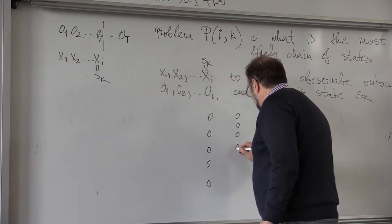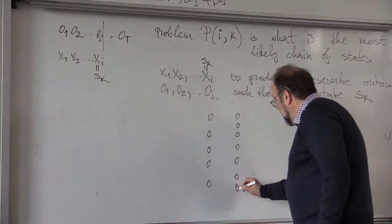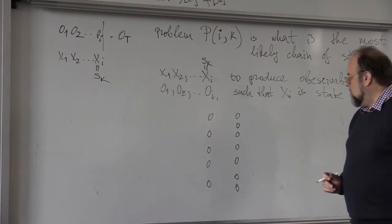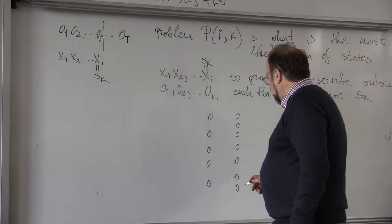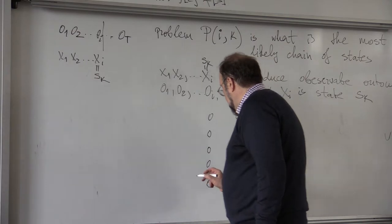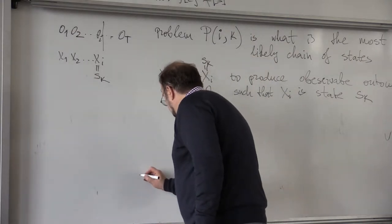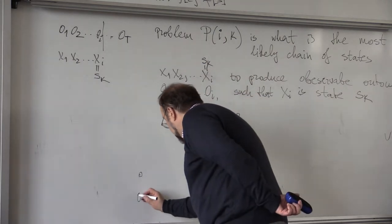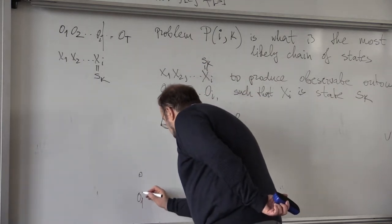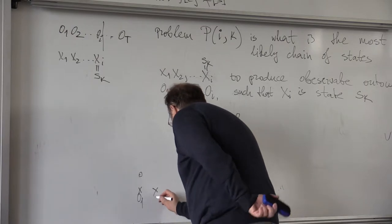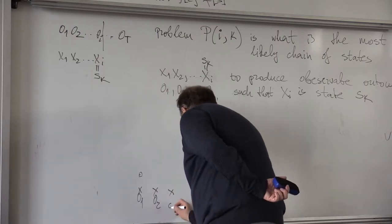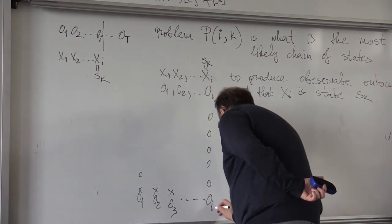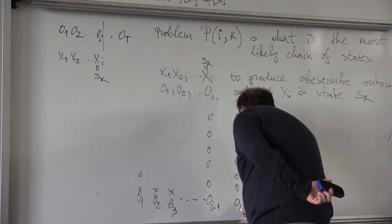So assume that these are all of your states. You start from here, and you have observations O1, so here are observations with axes, O2, O3, OI-1, OI.